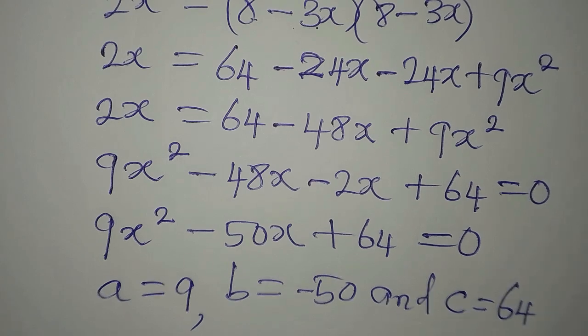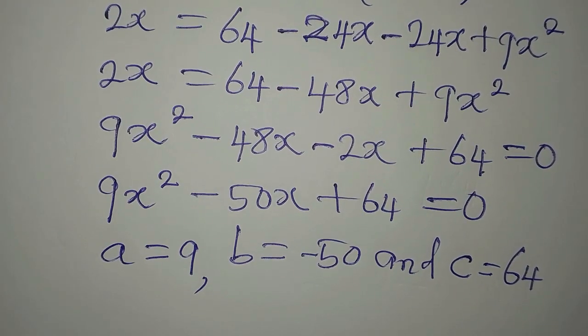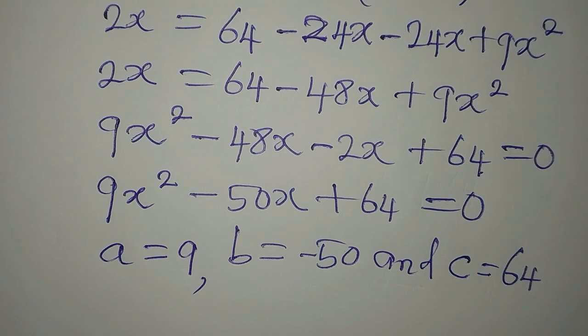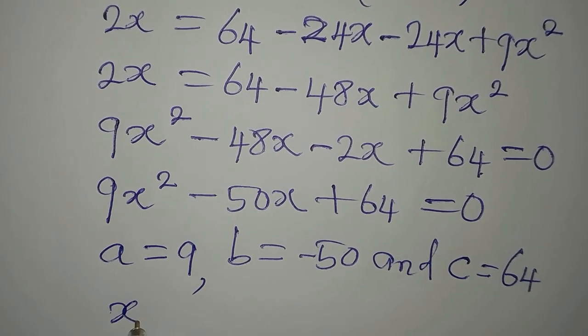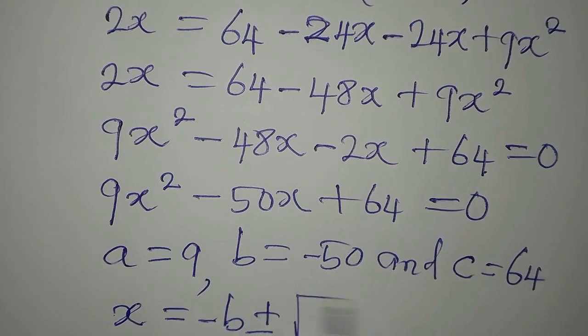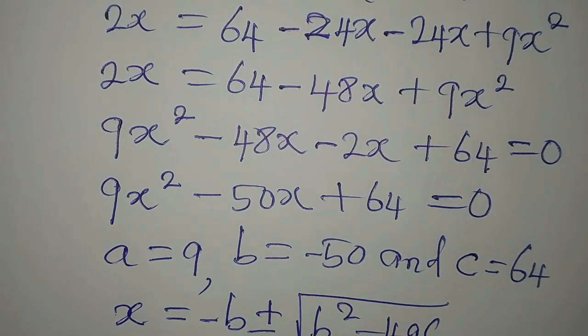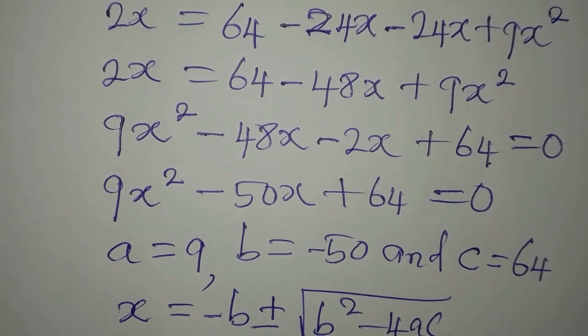One of the most difficult things while using the formula method is to remember the formula. The formula is x equals minus b plus or minus square root of b squared minus 4ac, all over 2 times a.